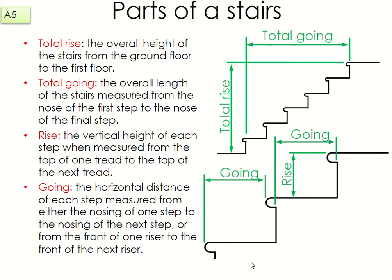To summarise: the total rise is from the ground floor to the first floor; the total going is the length of your stairs from the first step to the very last step; the rise is from the top surface of one tread to the top surface of the next; and the going is the horizontal distance from the nose of one step to the nose of the next.